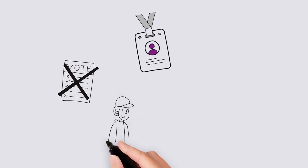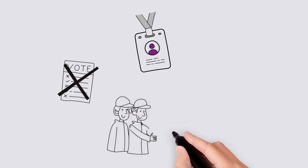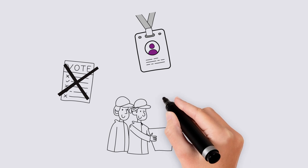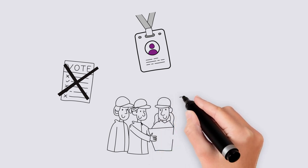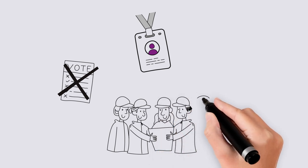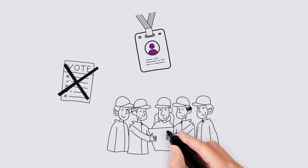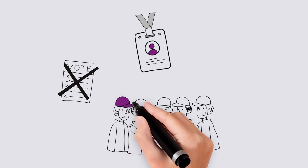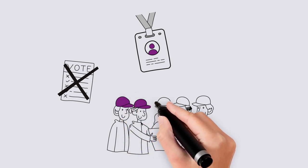To make any changes to the constitution, the current version must be amended or replaced. The new constitution must be presented to members at a special resolution, at an annual general meeting or a special general meeting.